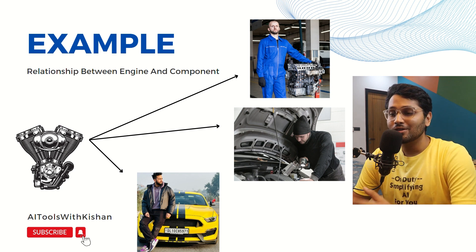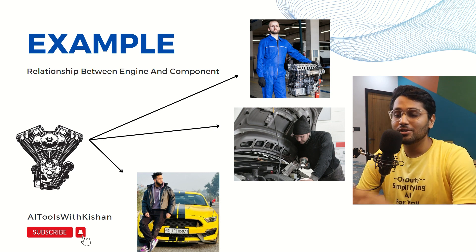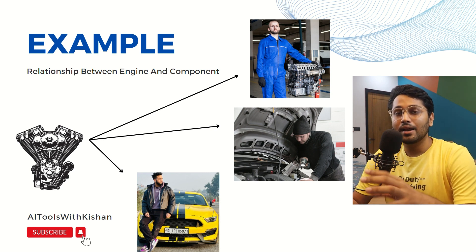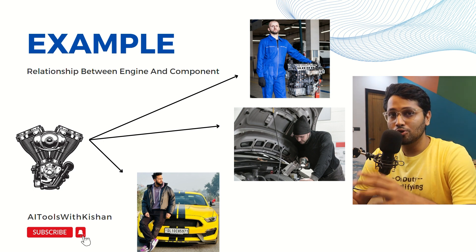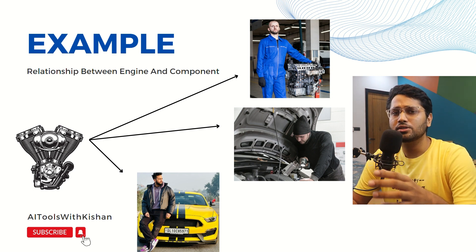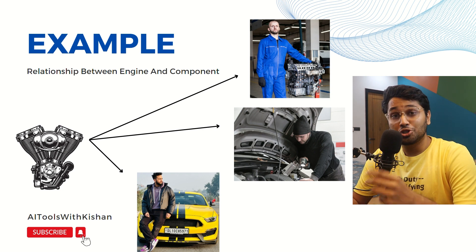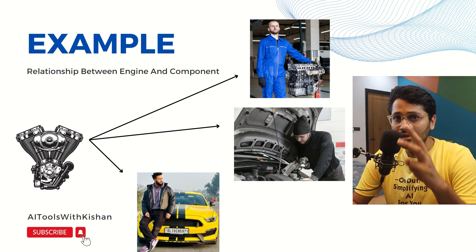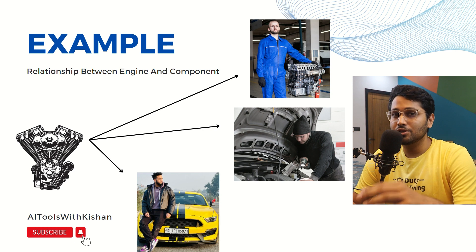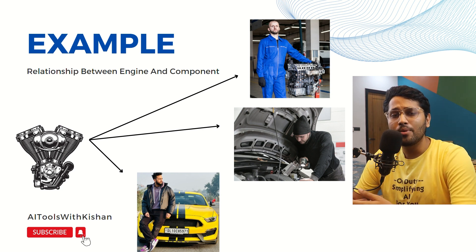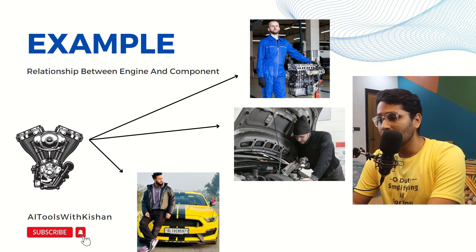And the third part is who uses it — like driving that car. So that car is like a tool. Tools like MidJourney, DALL-E, ChatGPT — they are the tools we are using. So these are the three applications, or three components of Generative AI. I hope you understand with this example.